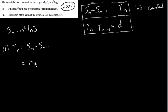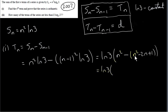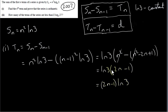Sₙ = n²·ln3, and Sₙ₋₁ is found by plugging n−1 in for n, so we get (n−1)²·ln3. We can factor out ln3, giving ln3 times [n² − (n−1)²]. Expanding (n−1)² gives n² − 2n + 1, so inside the brackets we have n² − (n² − 2n + 1) = 2n − 1. So tₙ = (2n−1)·ln3. It's important to write 2n−1 in front of ln3 since it is not part of the argument of the ln function.